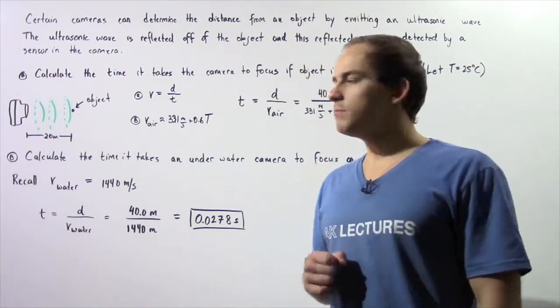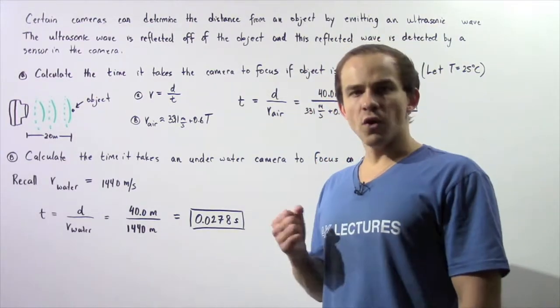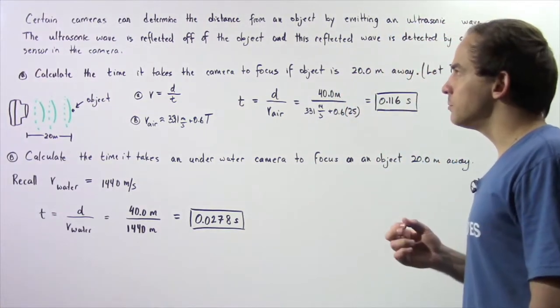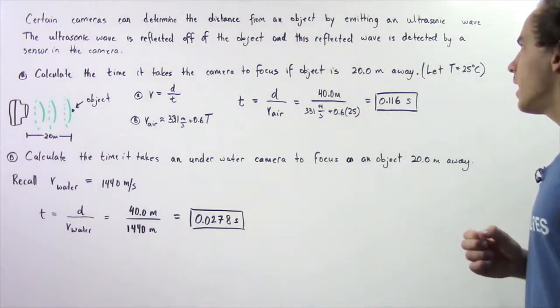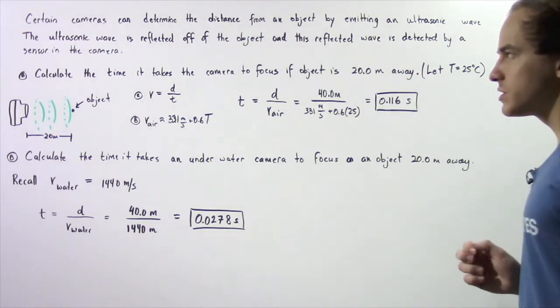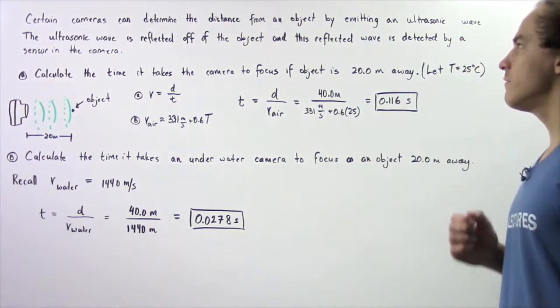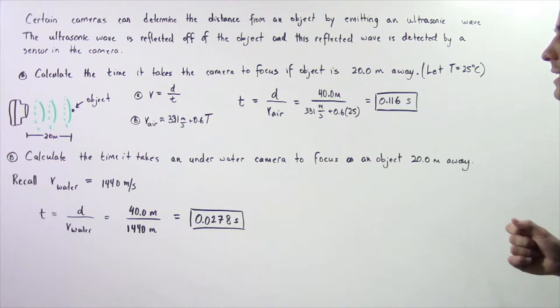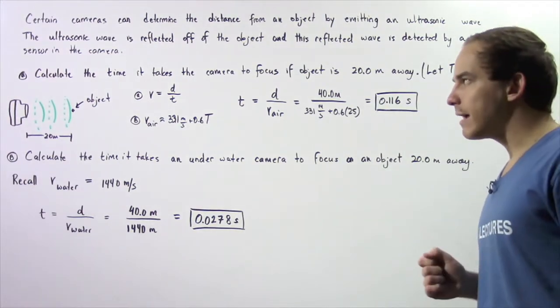Let's examine the following example that deals with autofocusing of cameras. Certain cameras can determine the distance from an object by emitting an ultrasonic wave. The ultrasonic wave is reflected off of the object and this reflected wave is detected by a sensor in the camera.